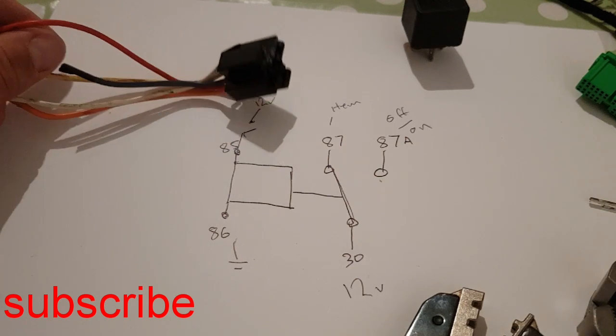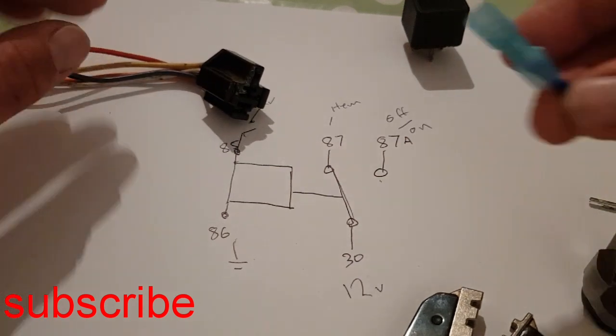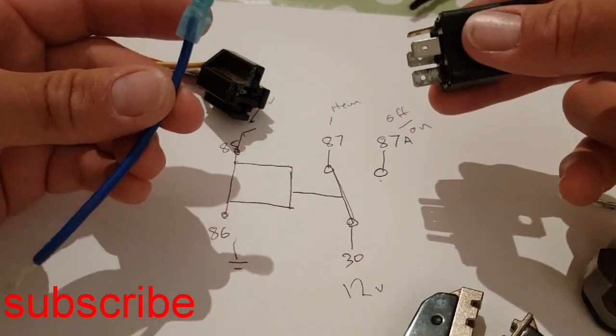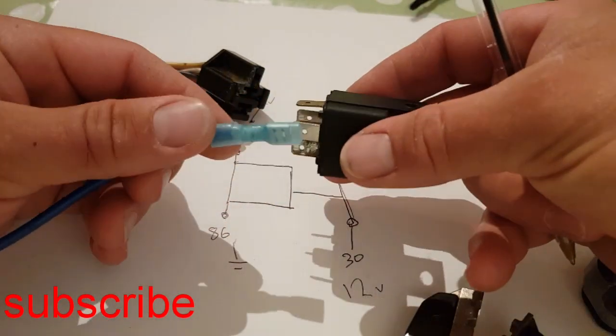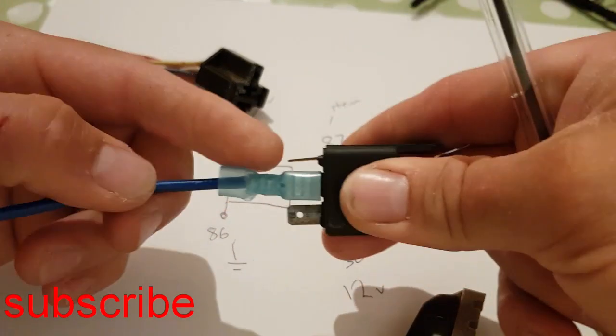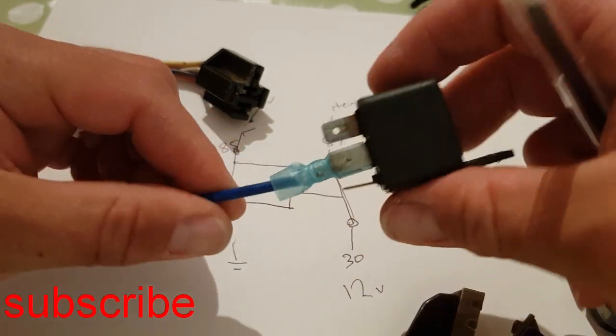Don't necessarily have to have a loom like this. You can use crimp connector terminals and a good gauge wire and then this will just push on. If you haven't already, I've done a video just a minute ago about crimp connectors and how to install them on wiring correctly.